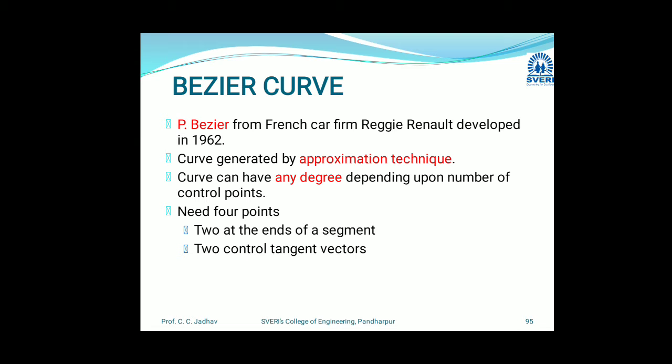The Bezier curve was developed by Pierre Bezier from Renault in 1962. This type of curve is generated by approximation techniques. The curve can have any degree depending upon the number of control points. It needs four points — two at the end of the segment and two control tangent vectors. So we need at least four points to define this curve.